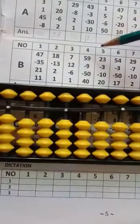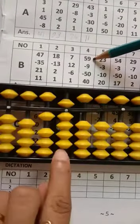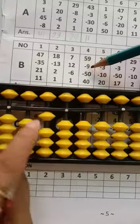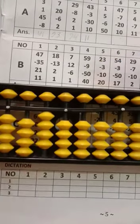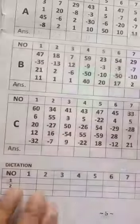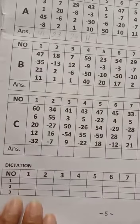So now question number 4. Start with 59. Then minus 9. Then minus 50. Then add 40. Your answer will be 40. Thank you. With this trick, we have completed page number 5.